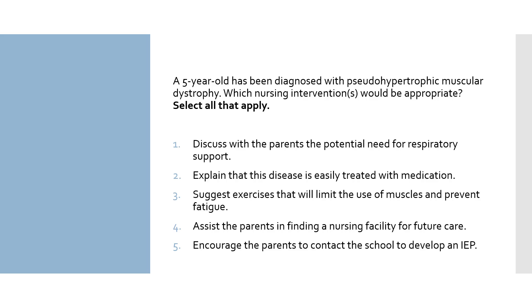Here's the next question. A five-year-old has been diagnosed with pseudohypertrophic muscular dystrophy. Which nursing intervention would be appropriate? Select all that apply. Number one: discuss with the parents the potential need for respiratory support. Number two: explain that this disease is easily treated with medication. Number three: suggest exercises that will limit the use of muscles and prevent fatigue. Number four: assist the parents in finding a nursing facility for future care. Number five: encourage the parents to contact the school to develop an IEP. This question asks you to pick correct interventions; keep in mind this is a progressive disease with no cure. Look at each answer individually.